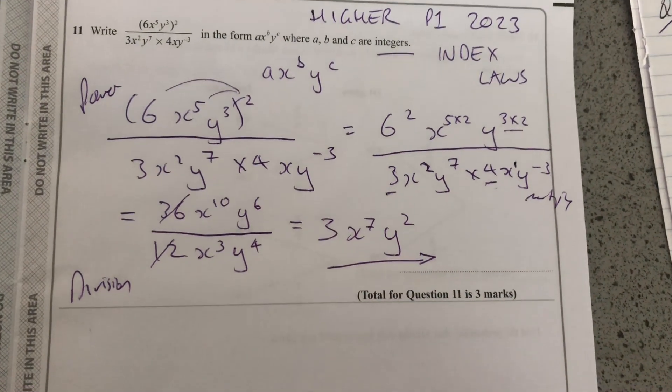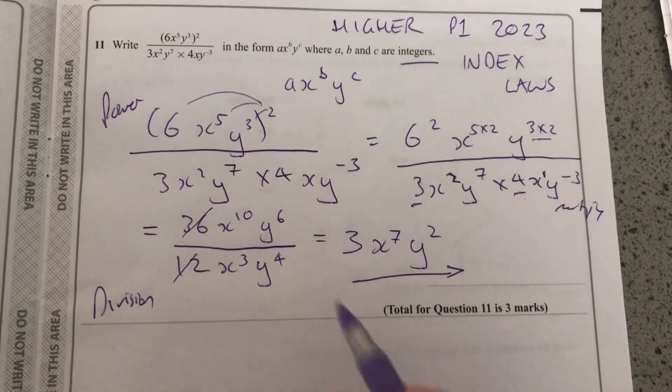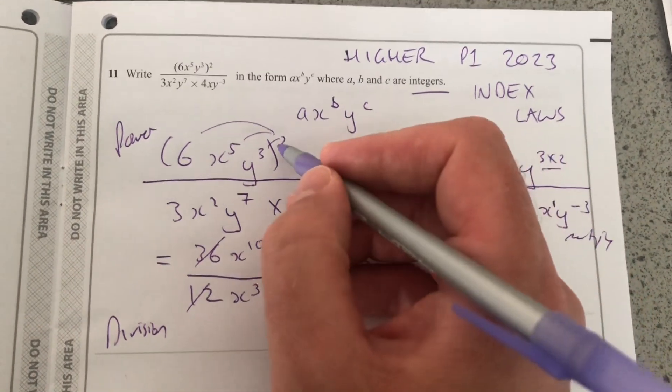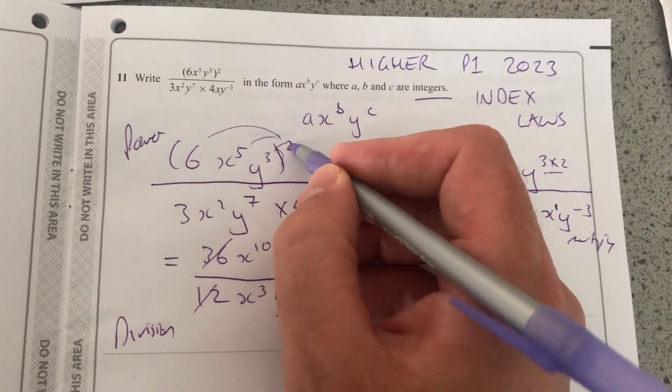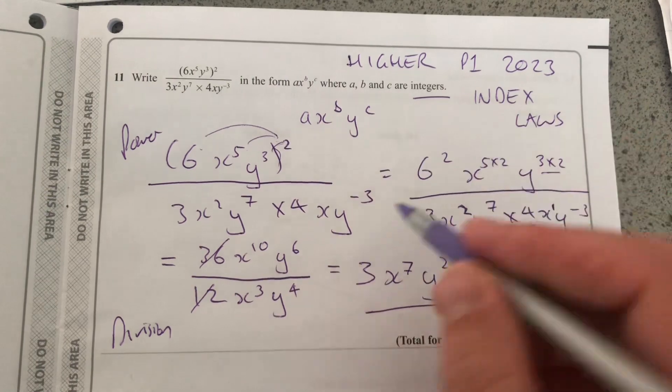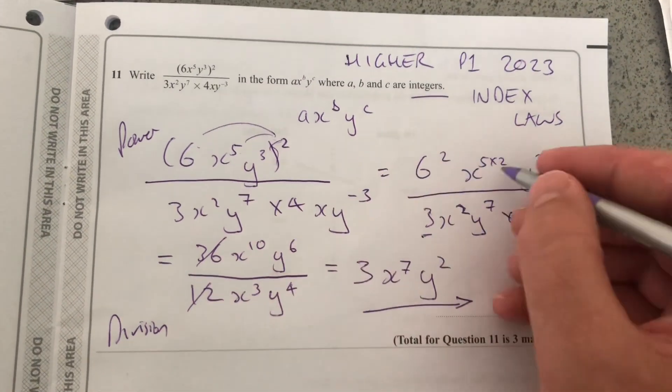But notice that there were three steps. So I'm just going to go over those again. First one is the power rule. So outside the bracket, that squared applies to each of those. And when you raise a power to a power, you multiply.